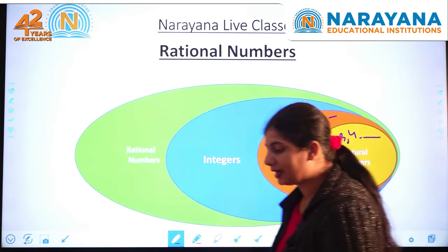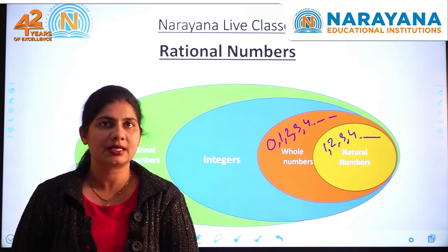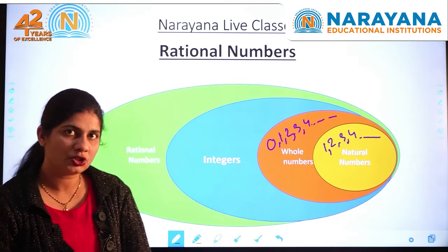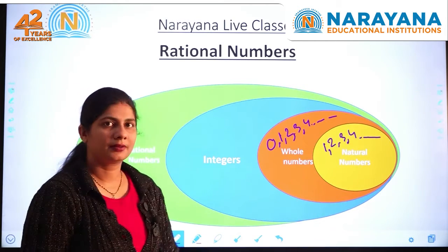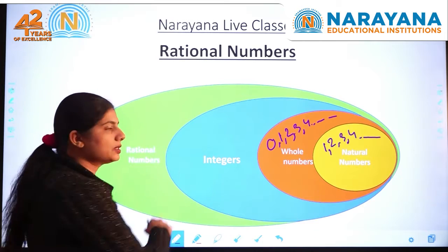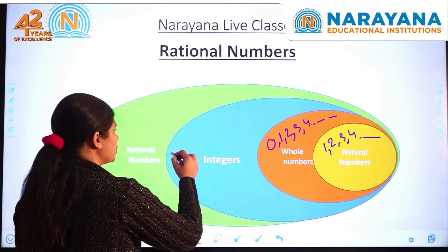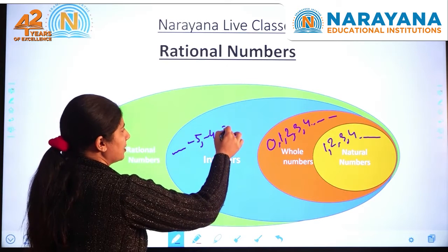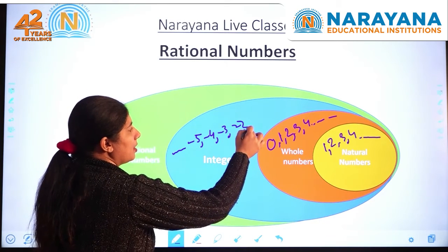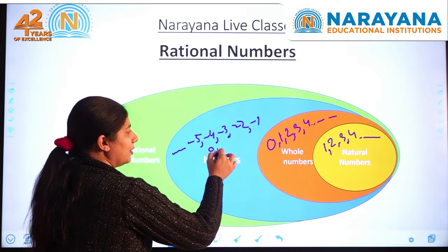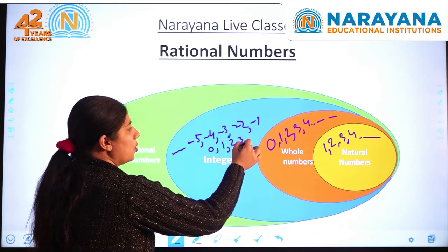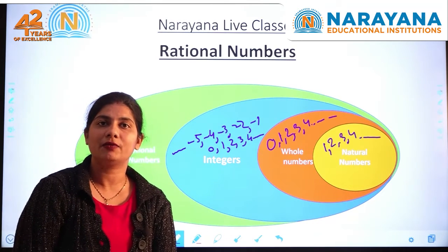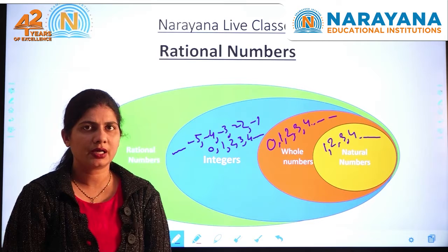After that we got some negative numbers as well, so again our number system changed. We got a new set of numbers called integers. In integers we have negative numbers and all the whole numbers — so all whole numbers including negative numbers are known as integers.